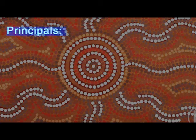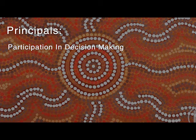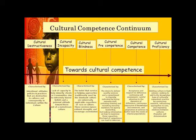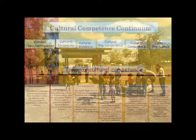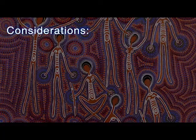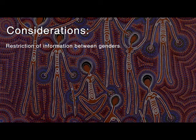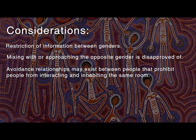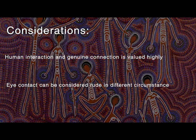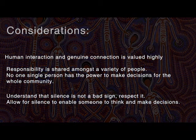Other identified principles are participation in decision making, building relationships, effective communication, and with whom to consult. Cultural competency moves beyond simply understanding that cultures are different, and requires one to demonstrate their ability to effectively interact cross-culturally. Cultural competency considerations that can impact the effectiveness of consultations include gendered knowledge restrictions, disproportionate gender interactions, avoidance relationships, eye contact, light handshakes, face-to-face interaction, shared responsibility, and respectful silence.